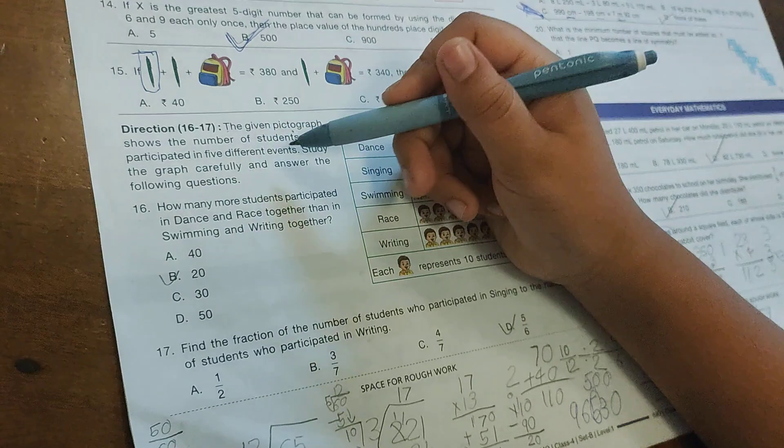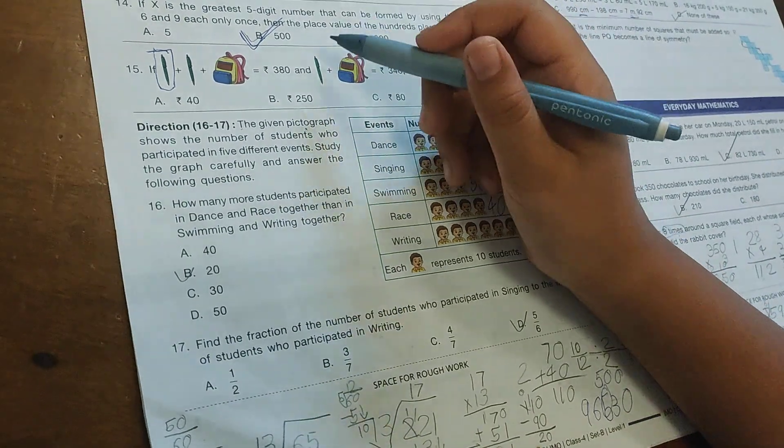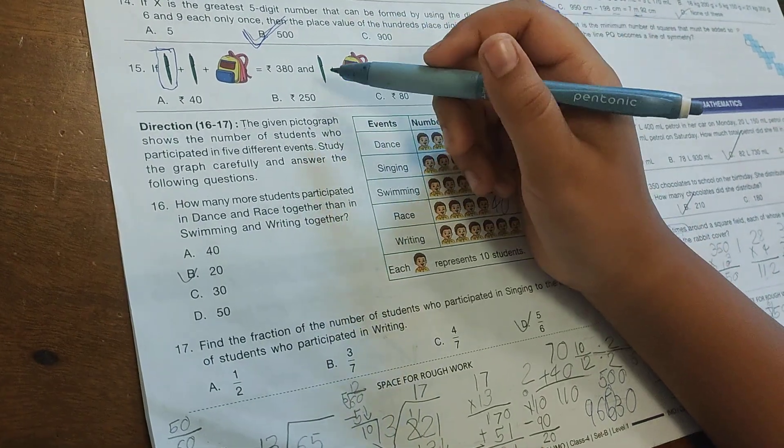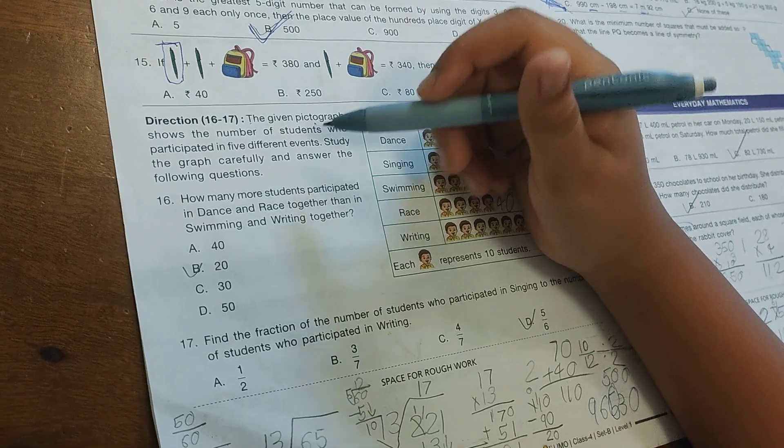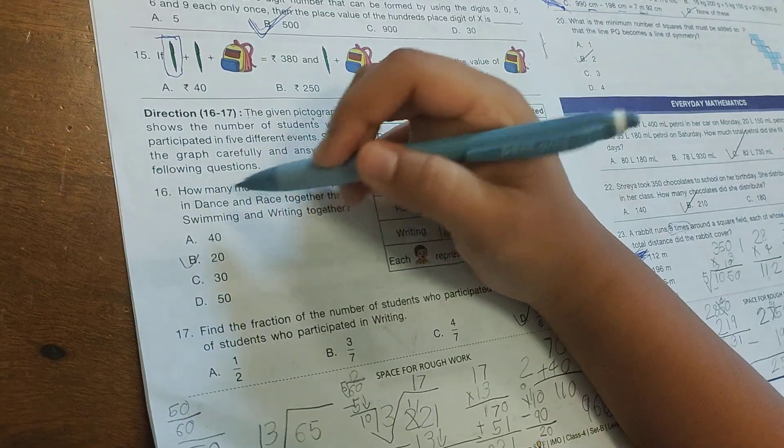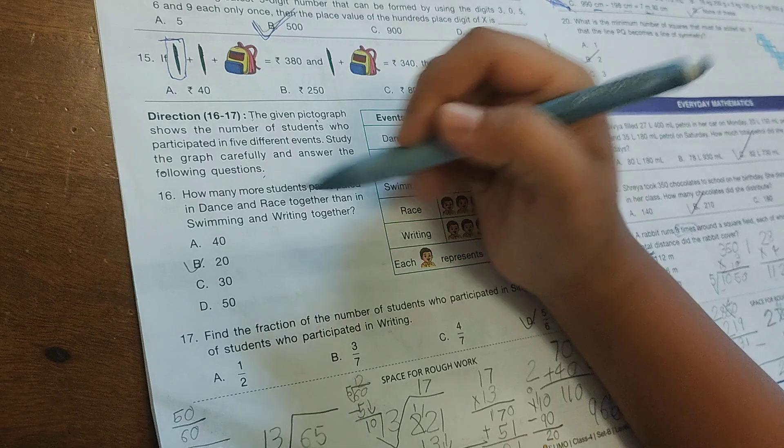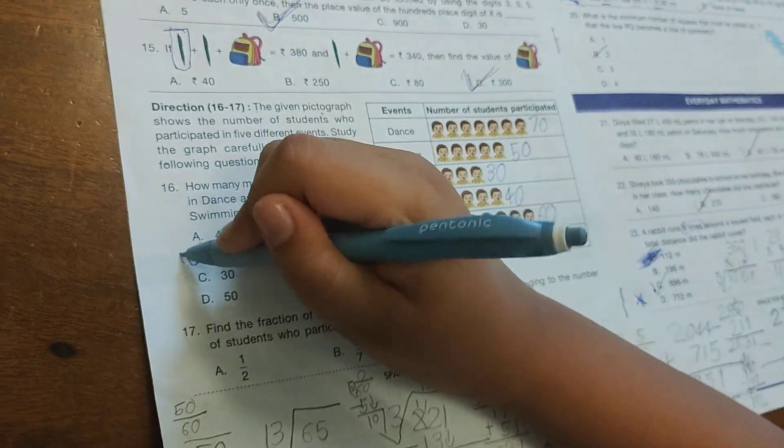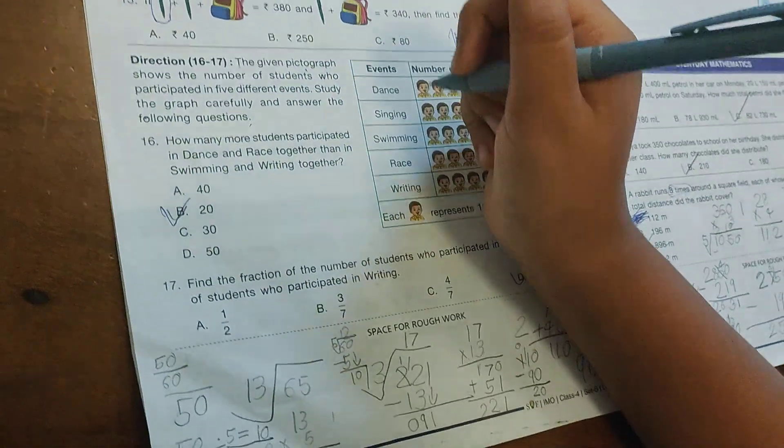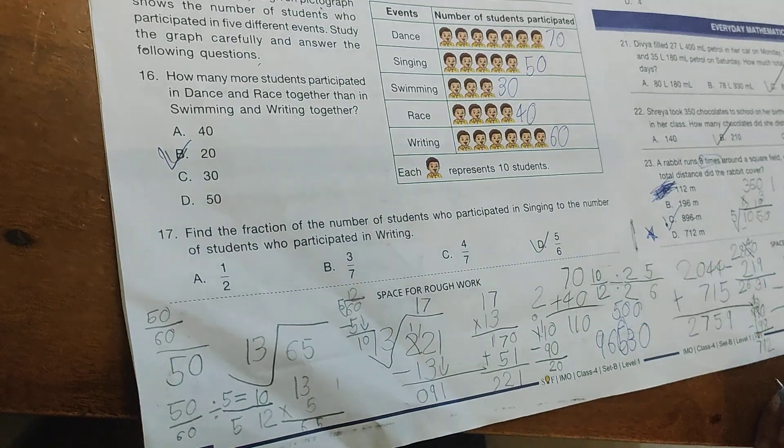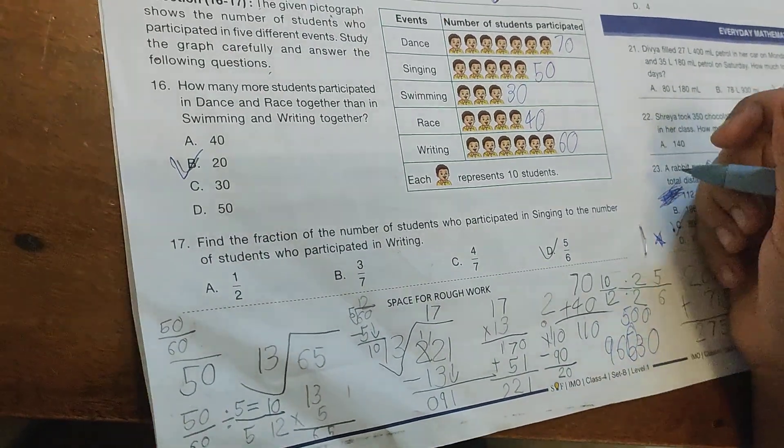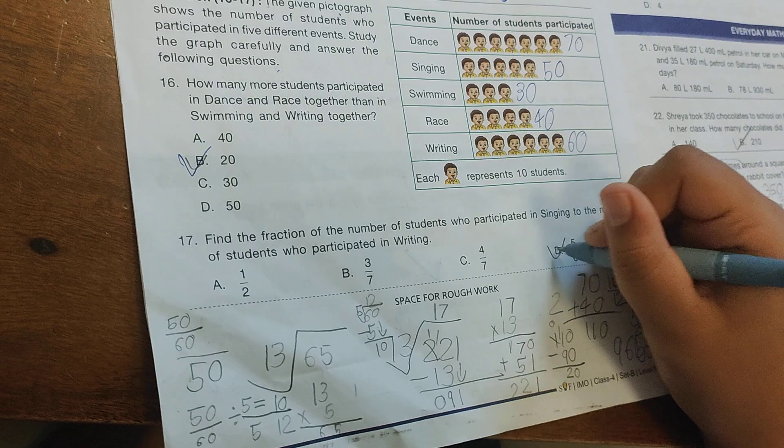The given pictograph shows the number of students who participated in 5 distinct events. Study the graph carefully. How many more students participated in dance and race together than in swimming and writing together? Option B - 20. Find the fraction of students in dance to students in writing. Option is 5/6.